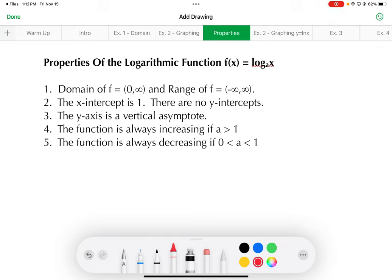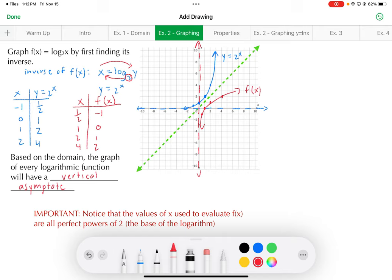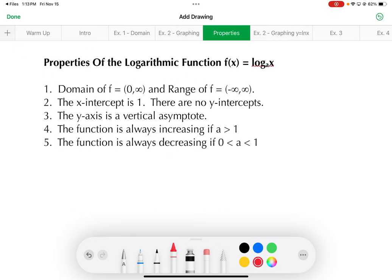Notice, all of those are the opposite of what they were for the exponential function. Then you've got properties 4 and 5. These are actually consistent with the exponential function. When your a value, your base, is greater than 1, your function is increasing. That's what we have here with the red curve. We had a base of 2, which is larger than 1. That's an increasing curve there. If we had a base that's smaller than 1 but larger than 0, then we would see the curve would be decreasing.